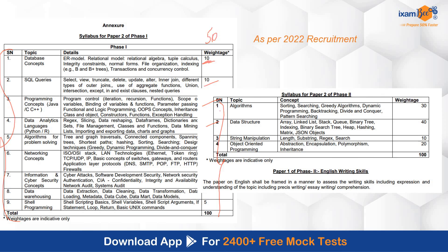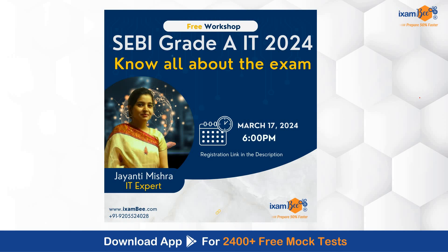Coming to phase 2 paper 2 — the syllabus includes algorithms, data structure, string manipulation, and object-oriented programming. It is 100 marks. String manipulation carries 10 marks, OOP carries 20 marks, data structure 40 marks, and algorithms 30 marks. How to attempt the coding, how to practice, and how to prepare for paper 2 will all be discussed specially by Jayanthi ma'am in a workshop on Sunday, March 17th at 6 pm. She will also discuss the Pariksit platform, which is used by SEBI for running code. Register with the link in the description. With her guidance, students in 2020 and 2022 also got 100 out of 100 in coding.